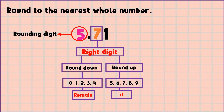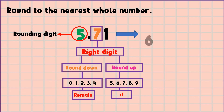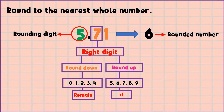So what is 7 — round down or round up digit? 7 is a round up digit. So we are going to add 1 to 5. 5 becomes 6. Then 7 and 1 we are going to drop. The final answer is 6. This is our rounded number.